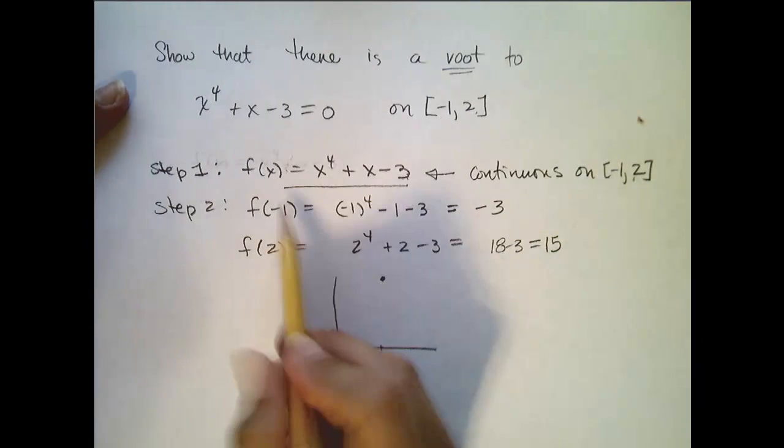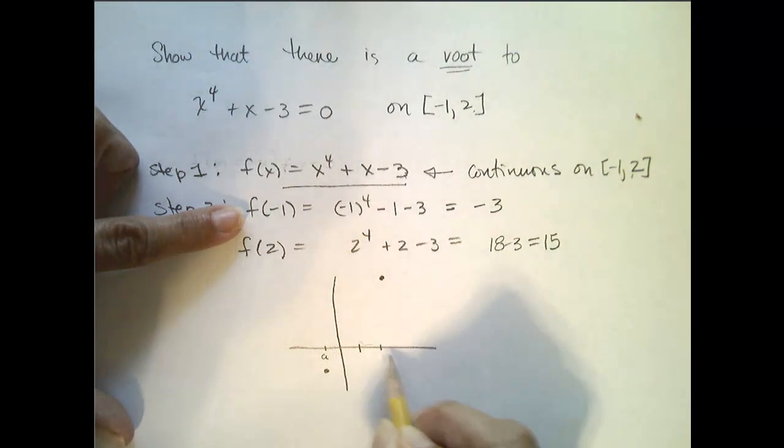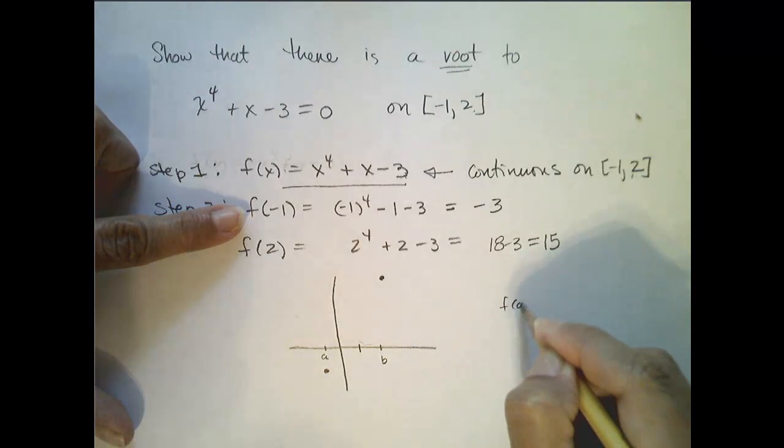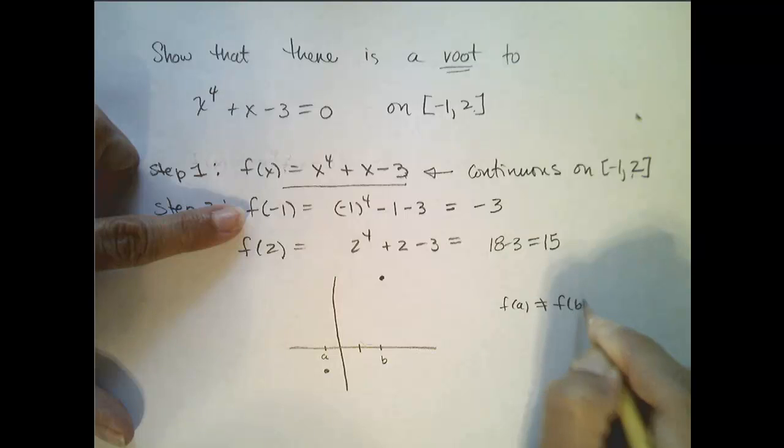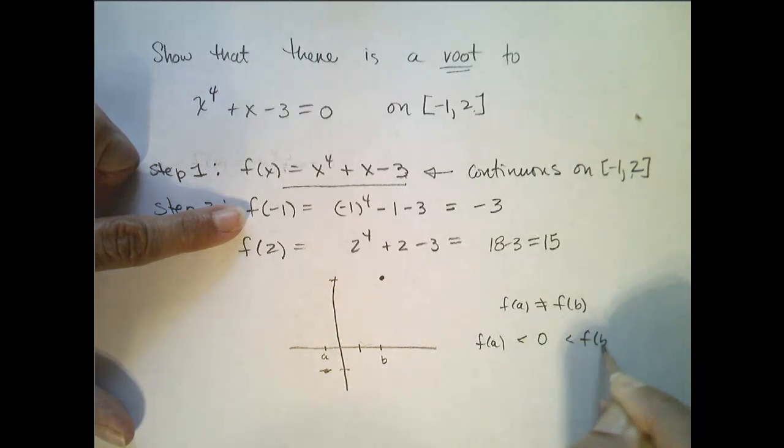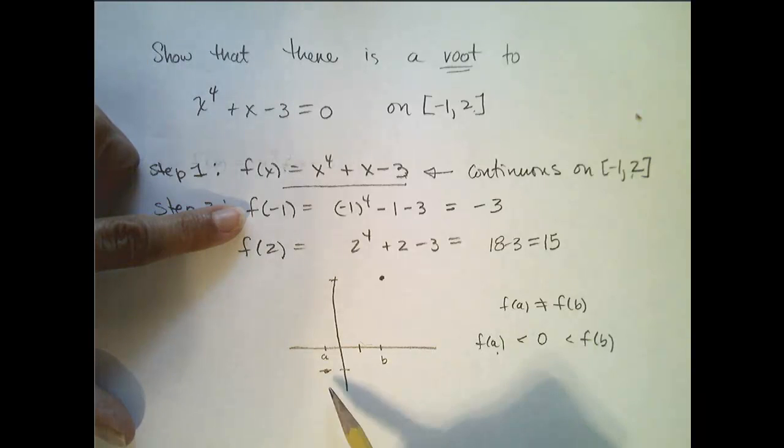Now, so here it could be my a, and here is my b, and I notice that f of a does not equal f of b, and 0 is a number between f of a and f of b, because f of a is negative, and f of b is positive, so 0 sits in between.